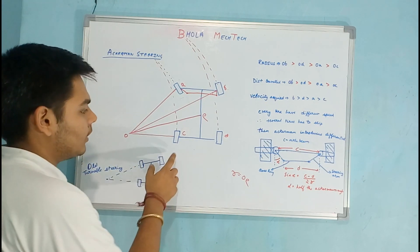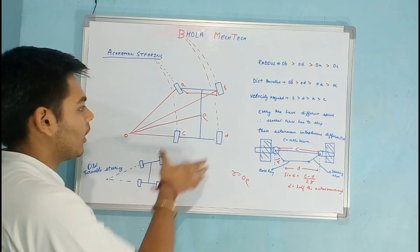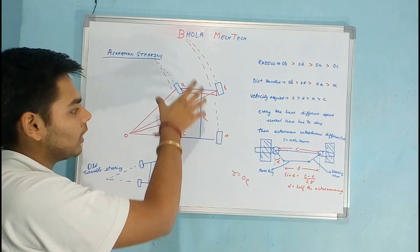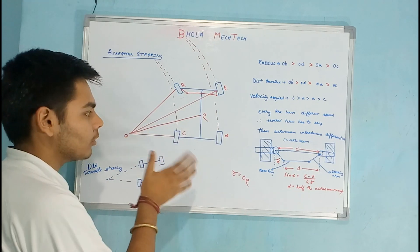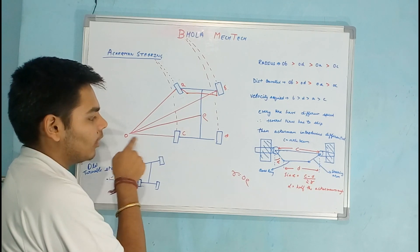He observed that each and every tire have different radius while turning because if the vehicle is turning about a center it must be having a center. If this is the center, then you can see this tire has the shortest radius and the tire has the longest radius.